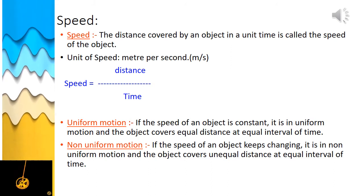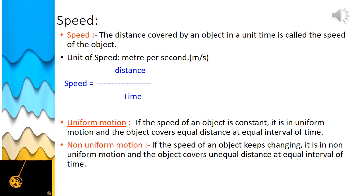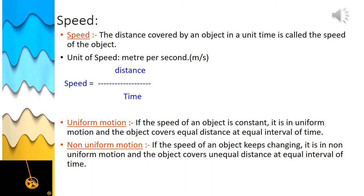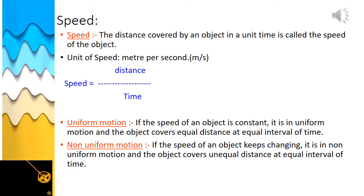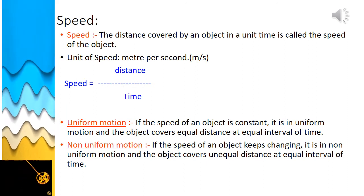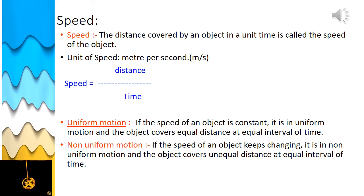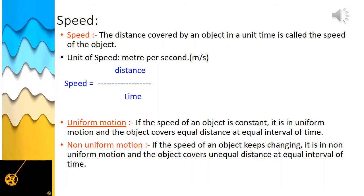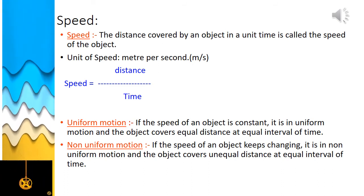You can find out whether an object is slow or fast by knowing its speed. Speed is the most convenient way to find out which of two or more objects is moving faster. The speed of a moving object is the distance traveled by it in a unit time. When you know the distance covered by an object and the time taken, you can calculate the speed using the formula: speed = distance / time.